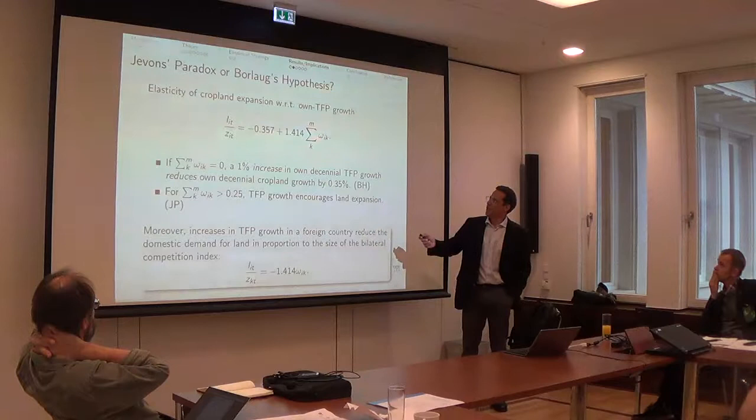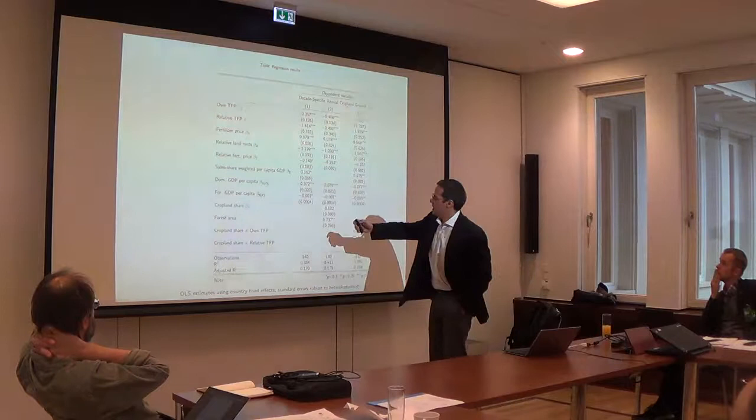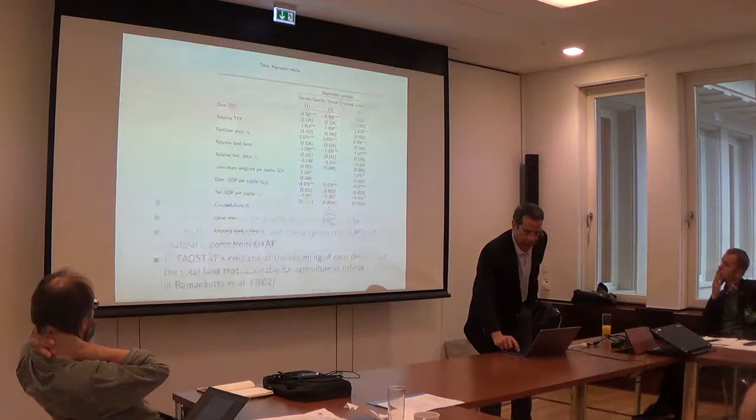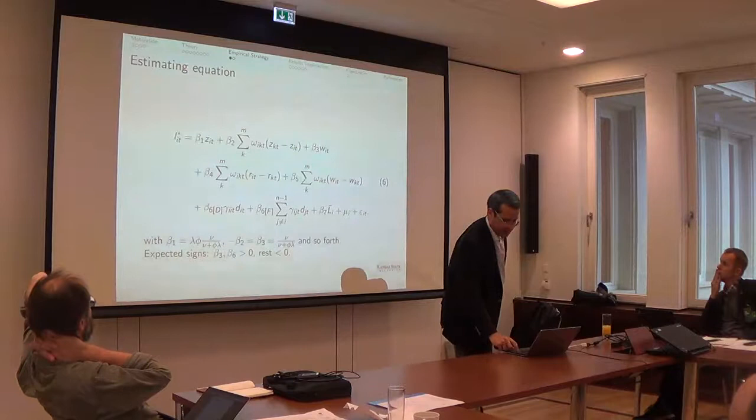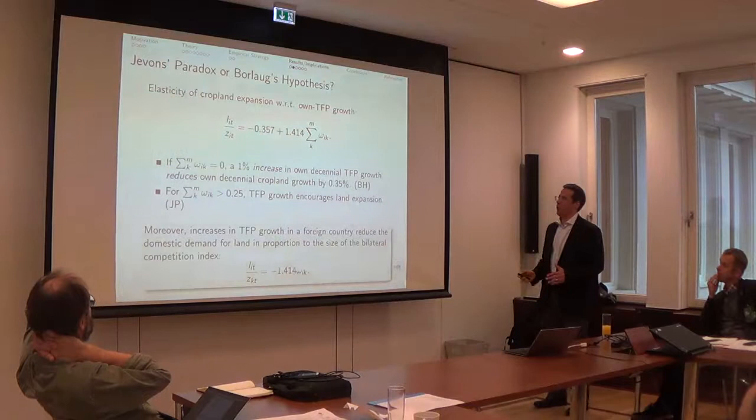And it's going to depend on these terms. So what I did here for full transparency, is basically take the derivative of the dependent variable against domestic TFP growth. So we have beta 1 minus beta 2 times this because the variable is inside here. So this is the way we observe Jevon's paradox or the other.